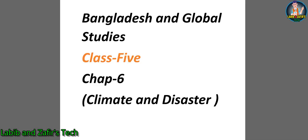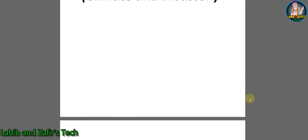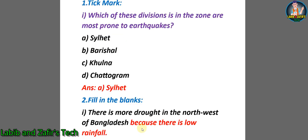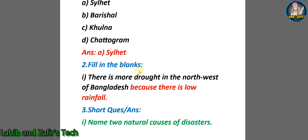Now let's go through the exercises part of this chapter — Bangladesh and Global Studies, Class 5, Chapter 6: Climate and Disaster. First, we'll go through some tick marks. Question one: Which of these divisions is in the zone most prone to earthquakes? A) Sylhet, B) Barisal, C) Khulna, D) Chittagong. We already saw the map of earthquake zones, and Sylhet is in the zone most prone to earthquakes. So the answer is A) Sylhet.